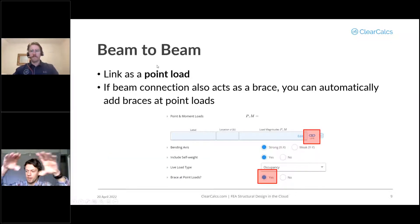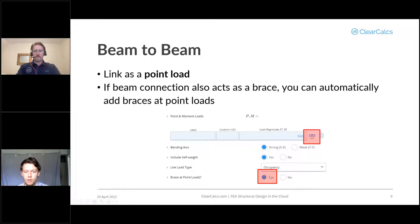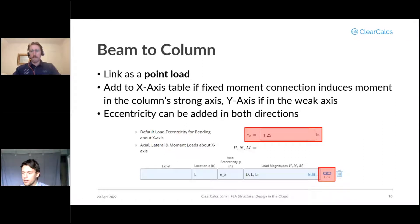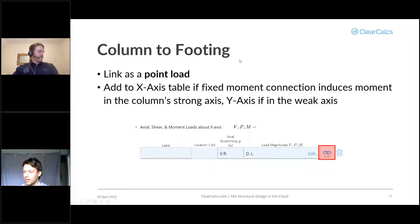First we're going to link a joist to a beam — joists can be linked as a line load, so we don't have to manually add a joist every 16 inches. Next, we'll look at a beam framing into another beam, linked as a point load. When a beam frames into another beam it can also prevent lateral torsional buckling and serve as a brace, giving a bit more strength. ClearCalcs will let you automatically add that brace. Then the beam sits on a column — same thing, linking as a point load — and we'll also consider eccentricity. Finally, the column links to a footing.